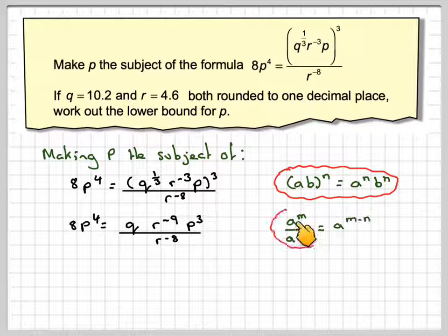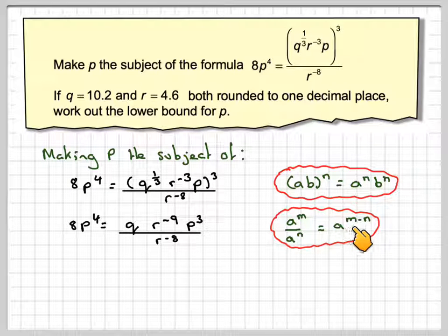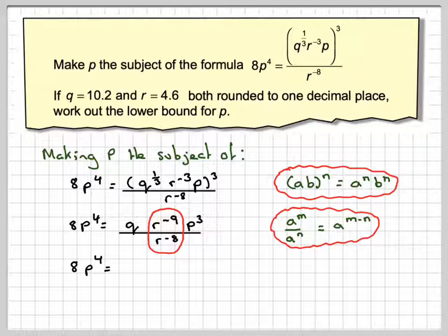Now using the idea that A^M / A^N equals A^(M-N), applying this here, we have 8P^4 equals Q times R^(-9 minus -8), so that becomes R^(-1) times P^3.